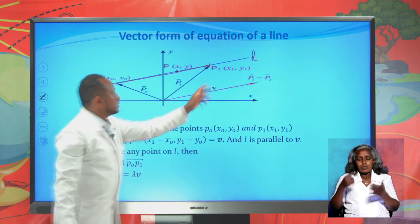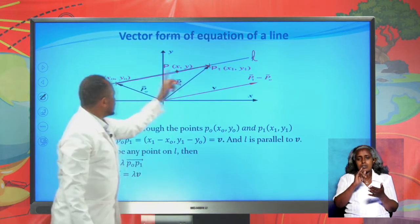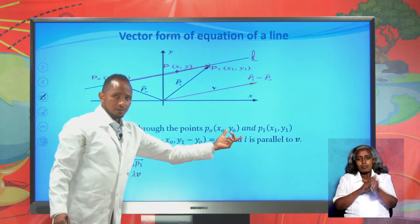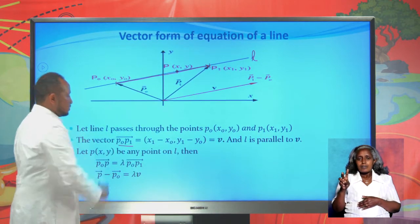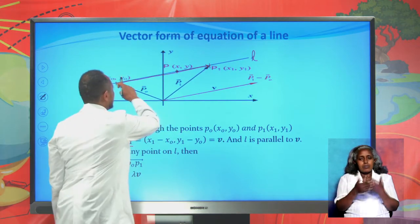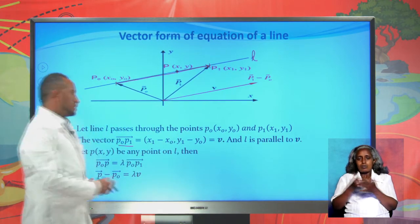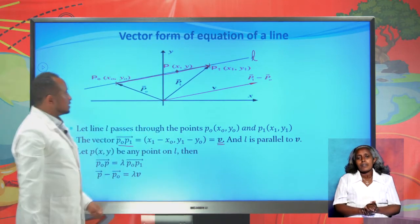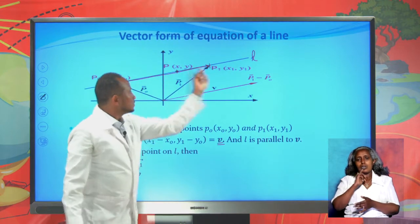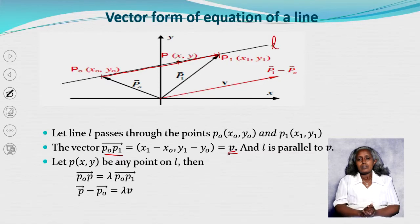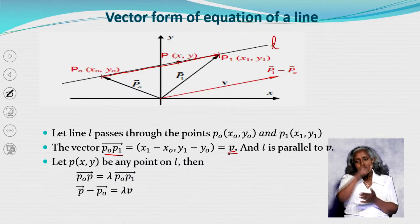The initial point is P₀ and the terminal point is P₁, so the vector P₀P₁ is (x₁ − x₀, y₁ − y₀), which we call v. The whole line is parallel to this vector v. So our line is some constant multiple of this vector.